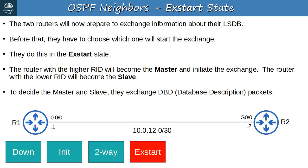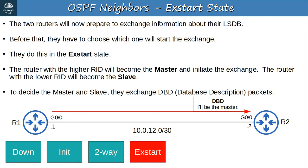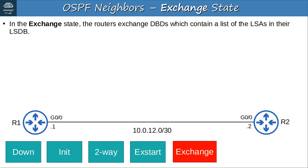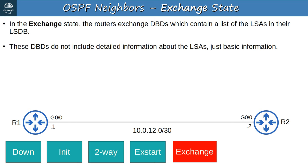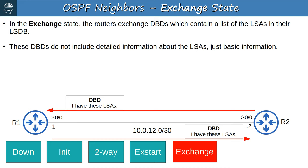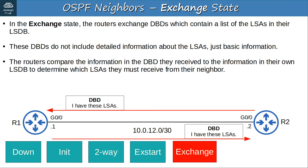In the Xstart state, R1 sends a DBD packet claiming to be the master. However, R2 has the higher router ID and corrects R1, declaring itself the master. In the next state, the Exchange state, the routers exchange DBDs which contain a list of the LSAs in their LSDB. These DBDs do not include detailed information about the LSAs — just basic information telling their neighbor what LSAs they have. The routers compare the information in the received DBD to their own LSDB to determine which LSAs they must request from their neighbor.